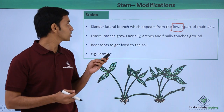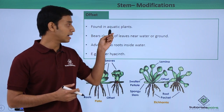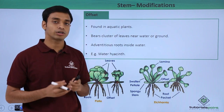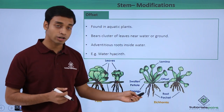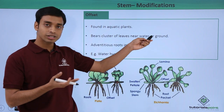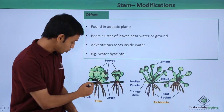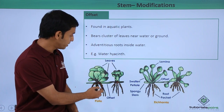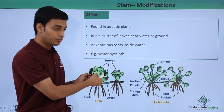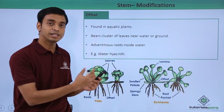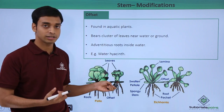The next modification is known as the offset, found in aquatic plants or plants growing in water. They bear clusters of leaves near the surface of the water. Examples are Pistia and Eichhornia. The adventitious roots remain under the water, and at each node a new plant arises. A very common example is the water hyacinth.